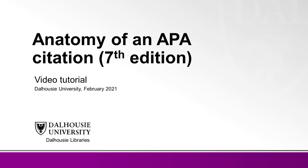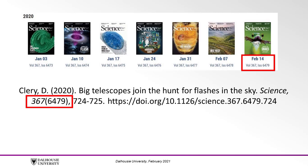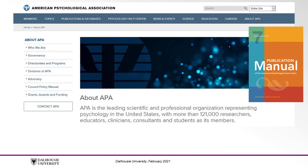This tutorial will introduce you to the elements of an APA journal article citation according to the APA 7th edition style manual. A citation is like an address, which provides the key elements to help a reader identify the location of the source. Citations can be created in a variety of different styles depending on the academic subject area. The APA style was created by the American Psychological Association and is used by scholars and students in the sciences and social sciences.